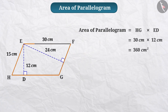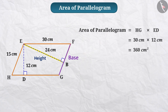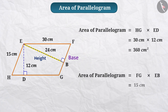Similarly, in parallelogram EFGH, on side FG, perpendicular EB is drawn from vertex E. Therefore, for parallelogram EFGH, base FG and perpendicular EB as height can be considered. From this, we get area of parallelogram as FG multiplied by EB, which is equal to 15 cm multiplied by 24 cm, equal to 360 square cm.